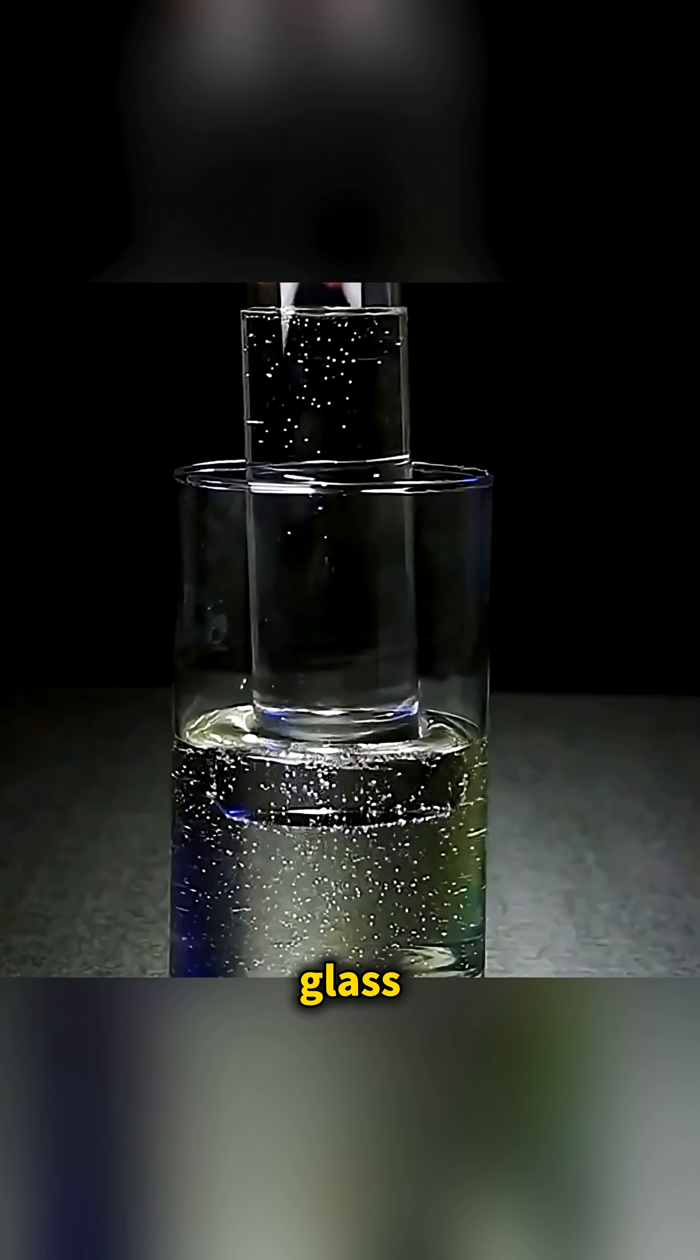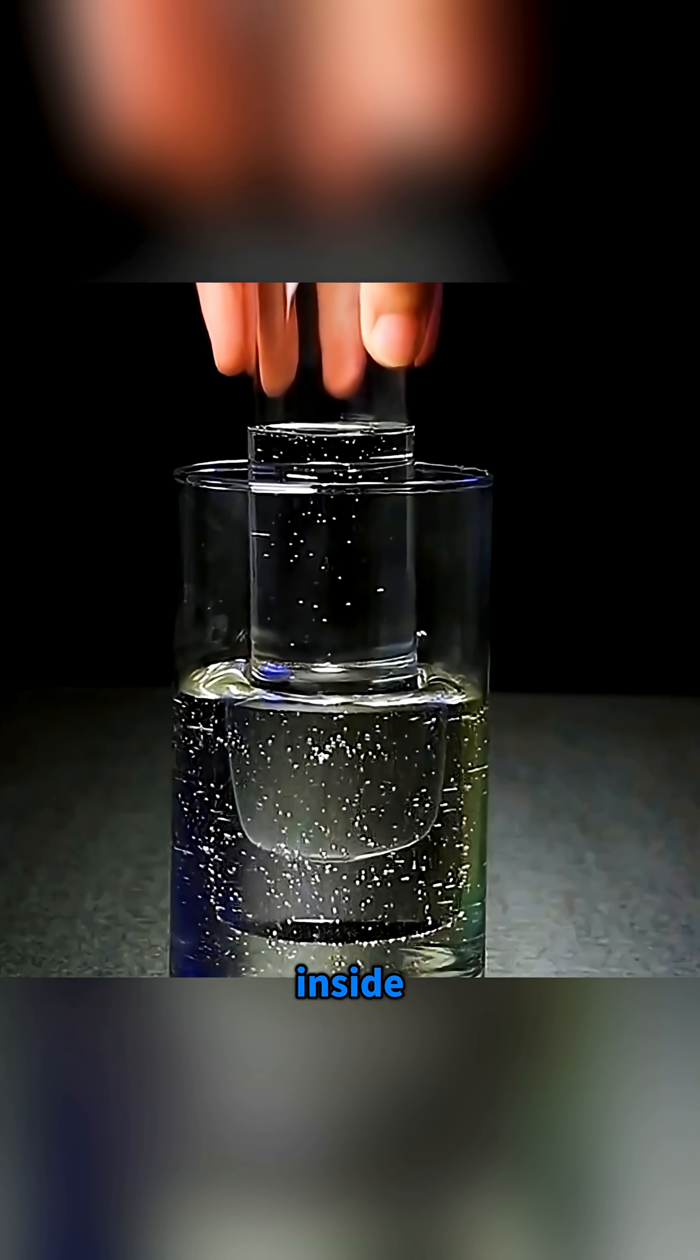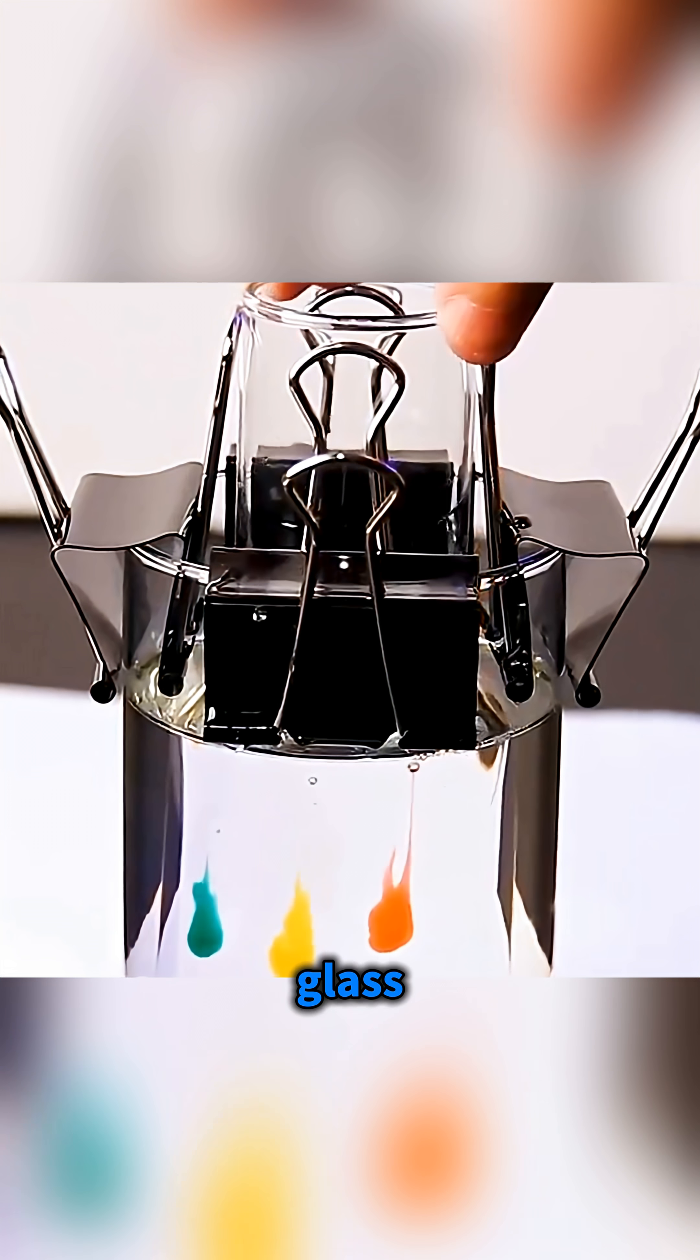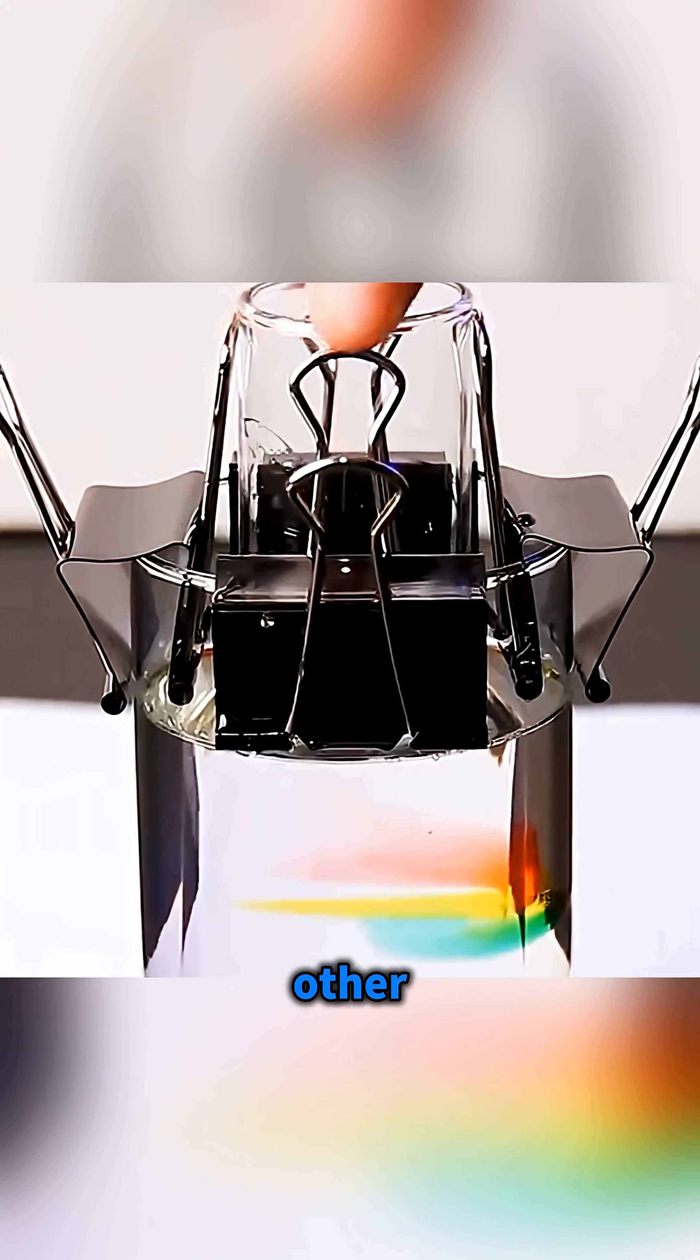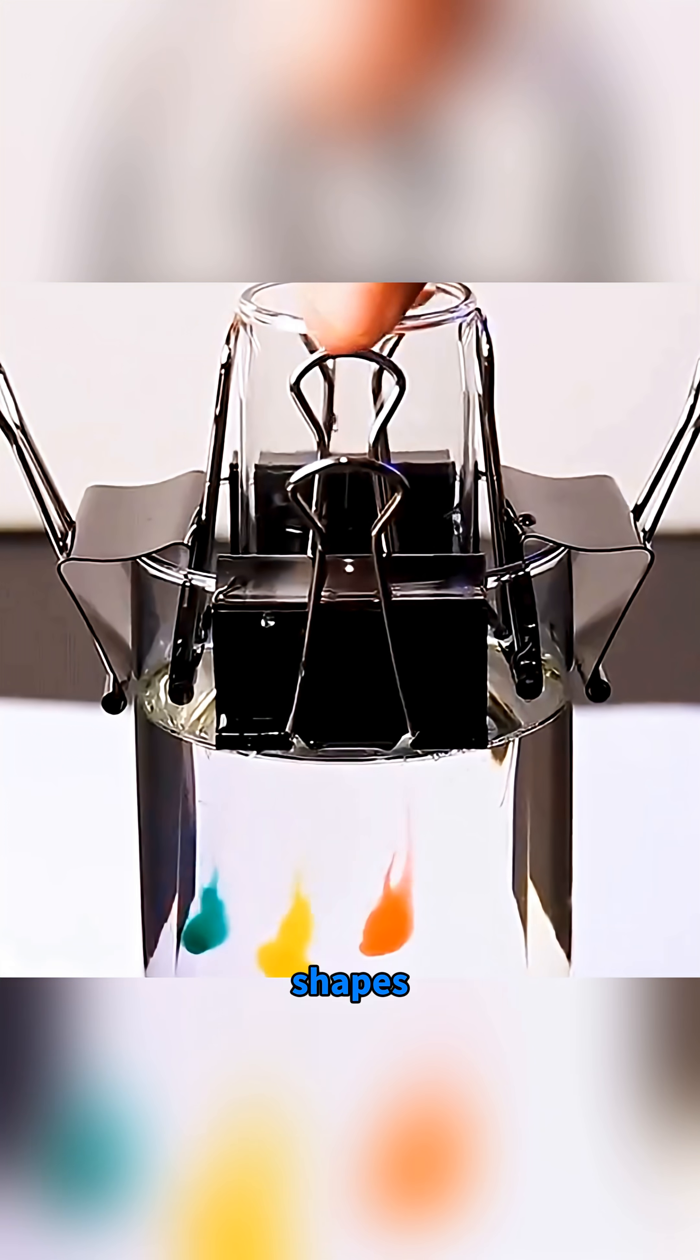Pour some baby oil into a glass, set a smaller glass inside, and drip in different colors of dye. As you twist the glass one way, the colors stretch and warp, then when you twist it back the other way, the patterns amazingly return to their original shapes.